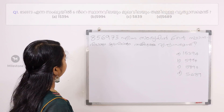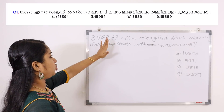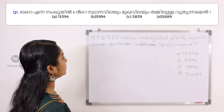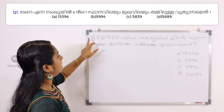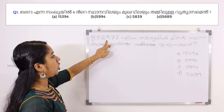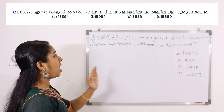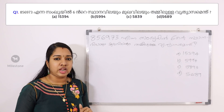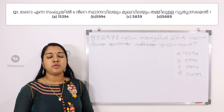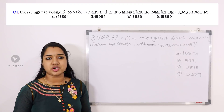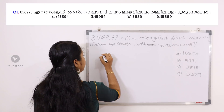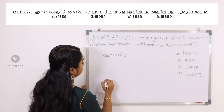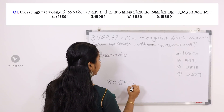That's the next video. The next video is about place value, face value, etc. This is the place value. 8, 5, 6, 9, 8, 3.